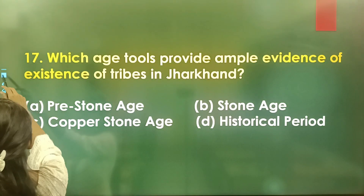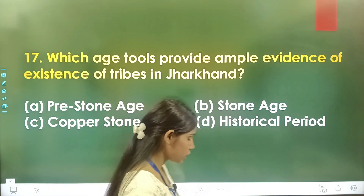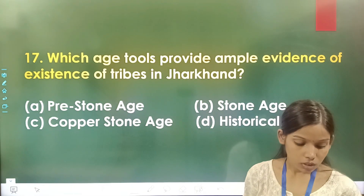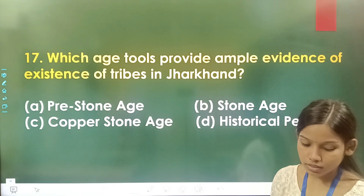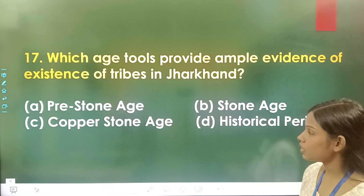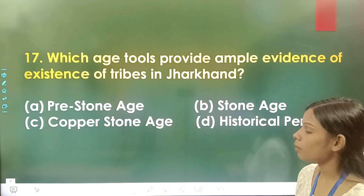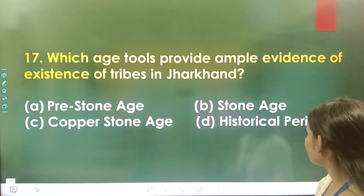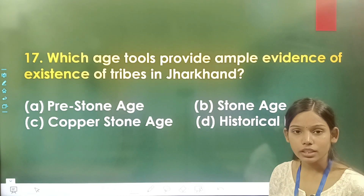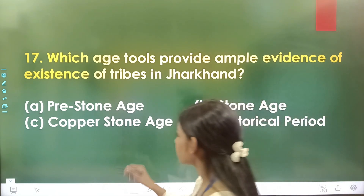Question number 17: Which age tool provides ample evidence of the existence of tribals in India? Option A is Pre-Stone Age, option B is Stone Age, option C is Copper Stone Age, and option D is Historical Period. The correct answer is option A, Pre-Stone Age.